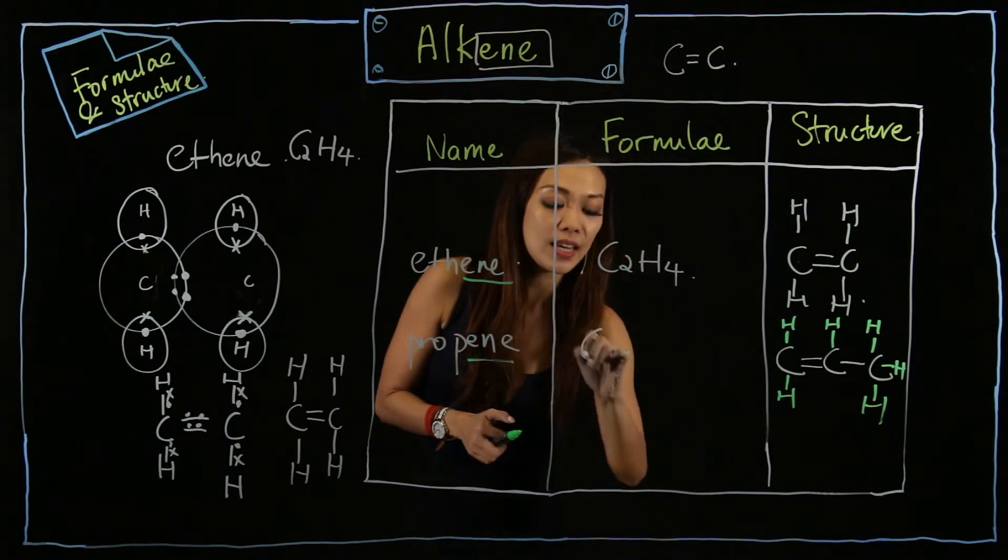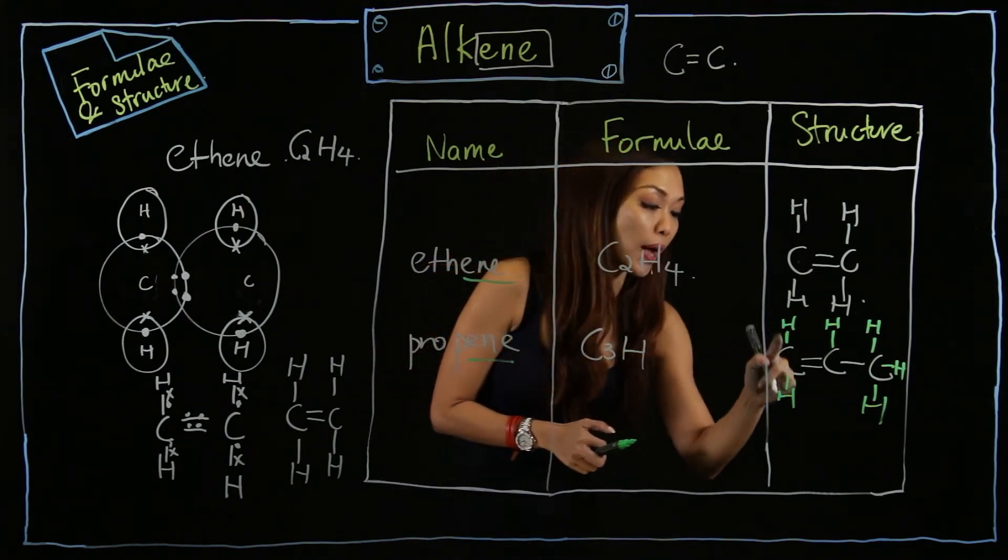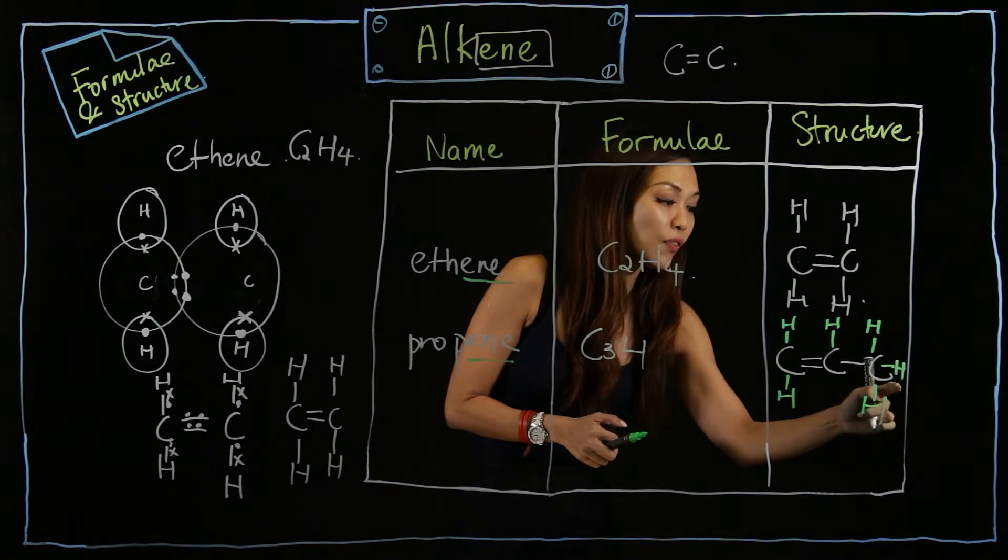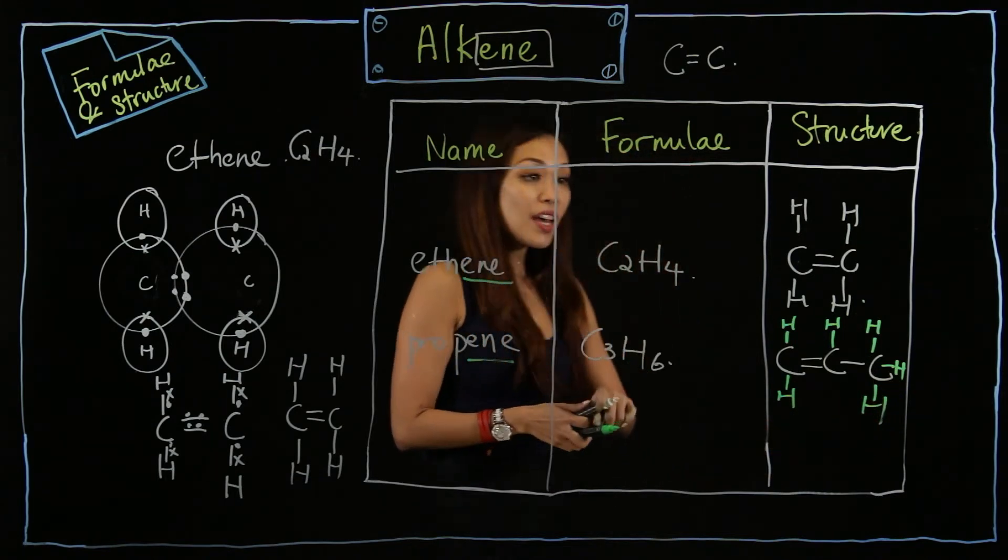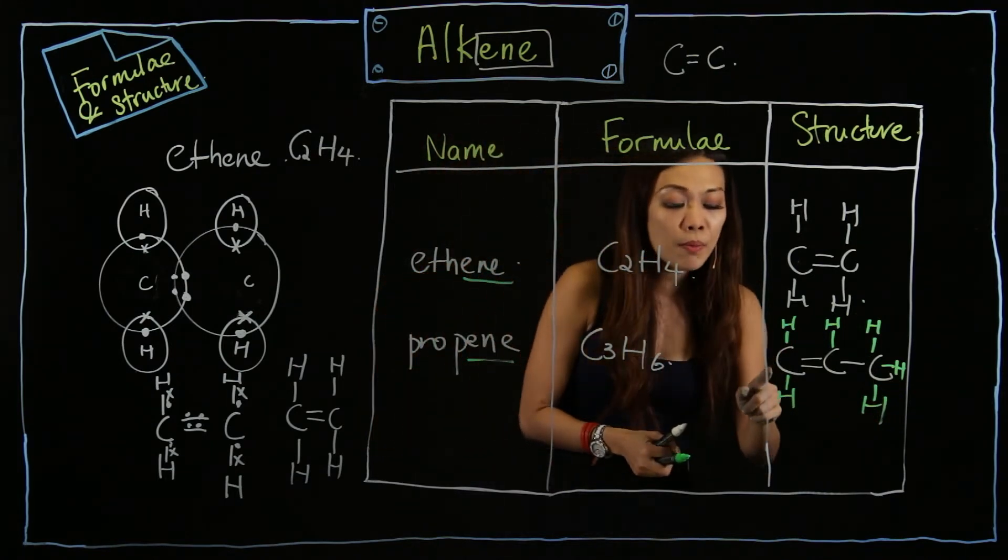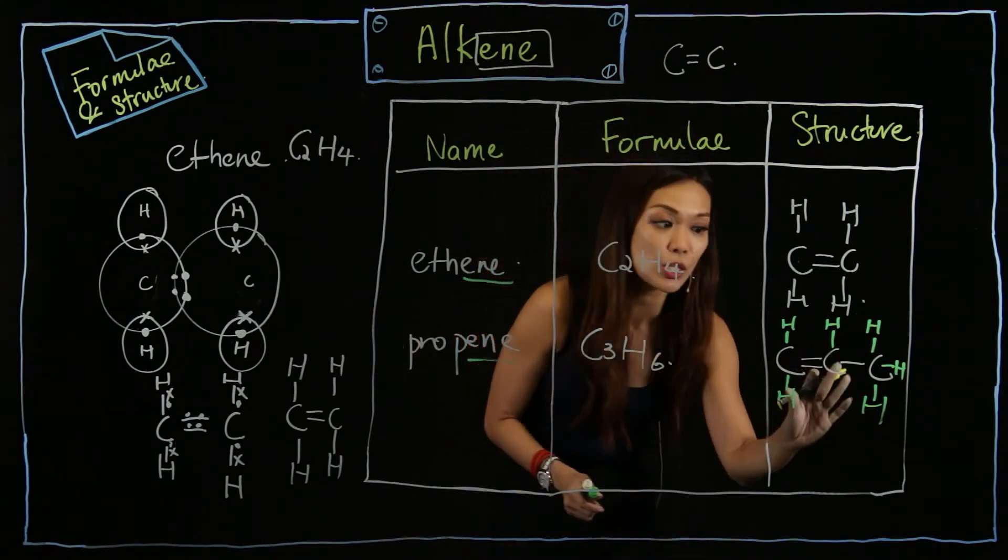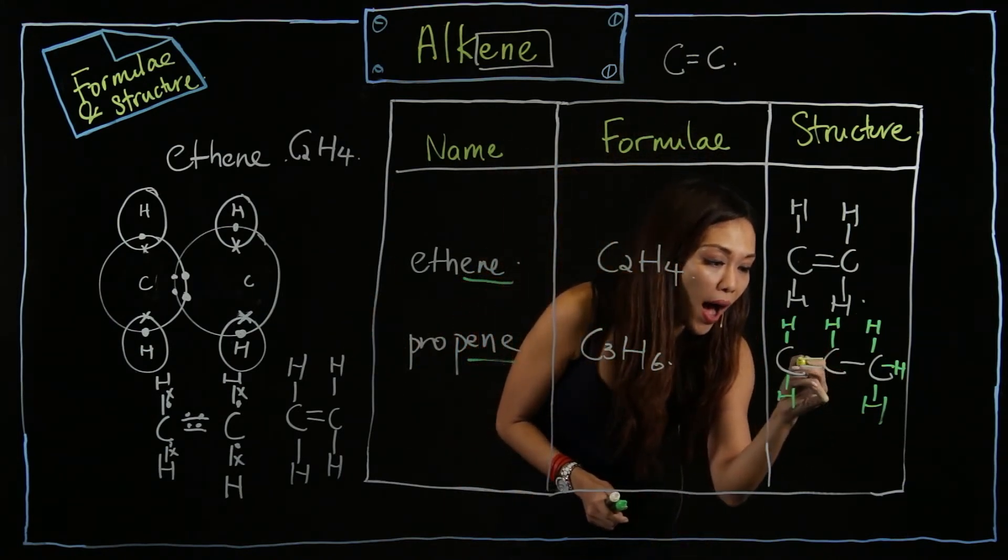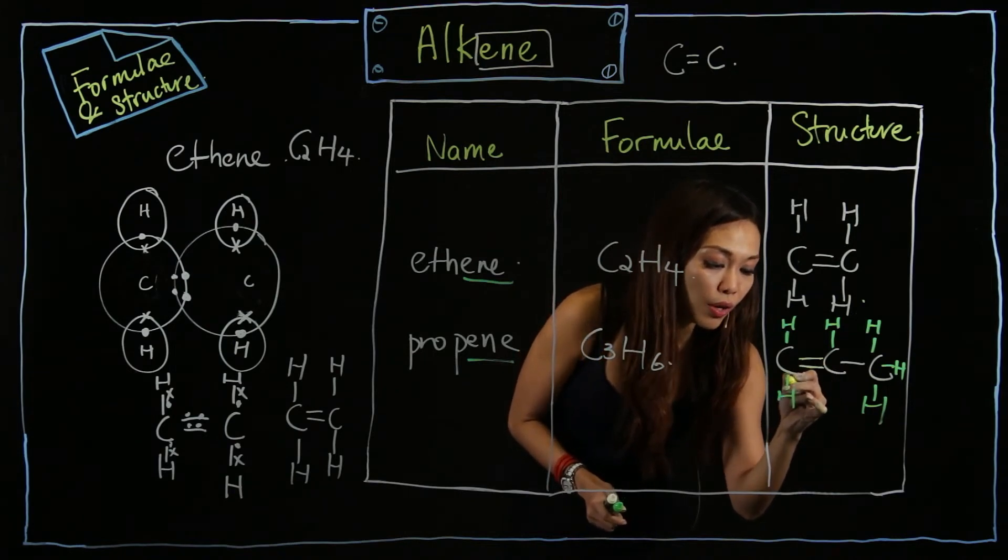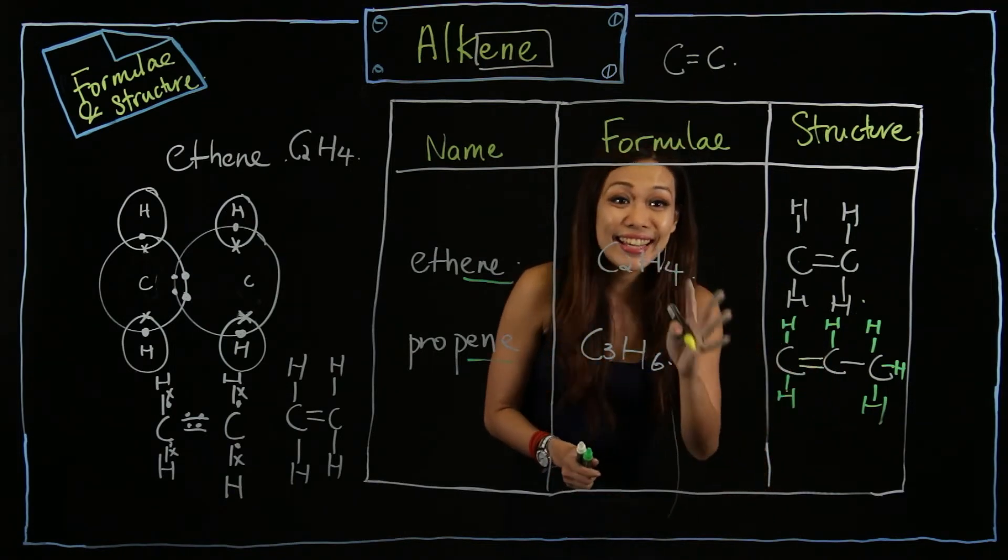The formula will be C3H... let's count. One, two, three, four, five, six. C3H6. Some of you will think 'Ms. Alina, you made a mistake here.' No, no, no. Draw your attention, eyes on this part. Can you count? One, two, three, four - it's exactly four electrons.